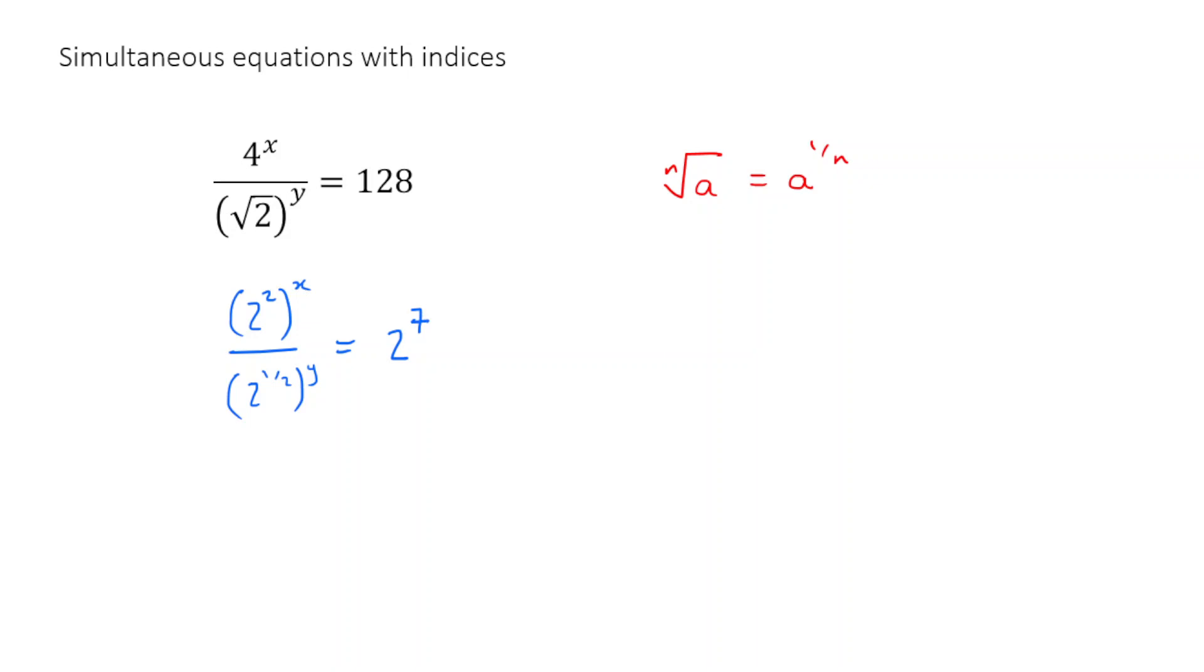These are some of the numbers that you'll need to be able to remember. 2, 4, 8, 16, 32, 64, 128, 256. These are all powers of 2. All right, well, next step, we're going to multiply out these powers as we did in the previous example. We're going to have 2 to the power of 2x divided by 2 to the power of a half y is equal to 2 to the power of 7.